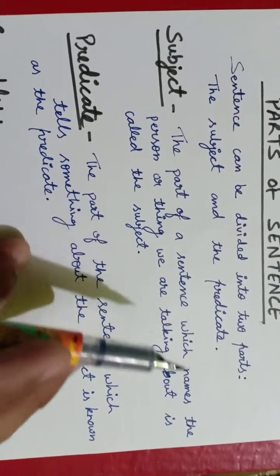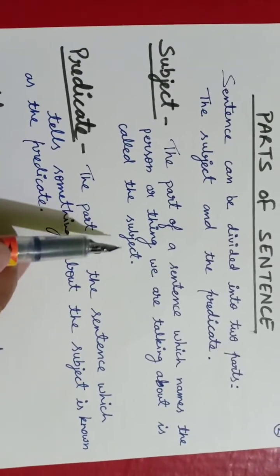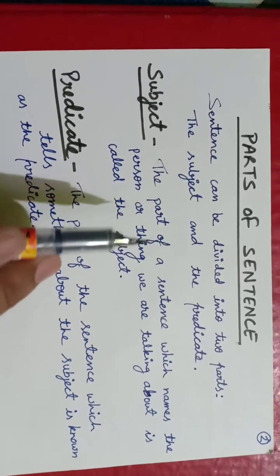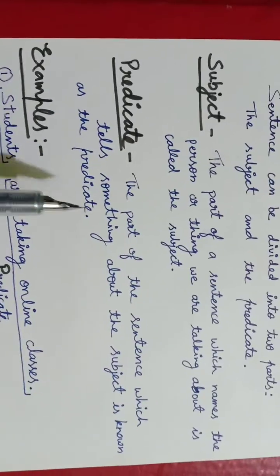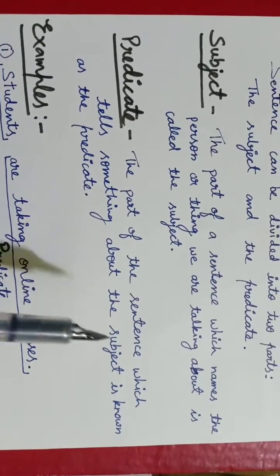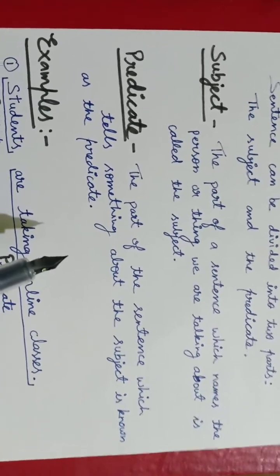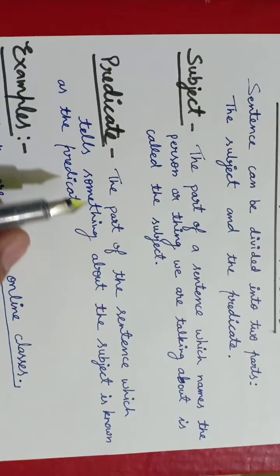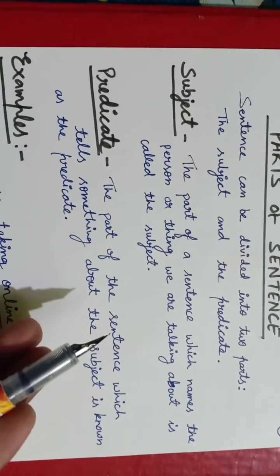The part of a sentence which names the person or thing we are talking about is called the subject. Sentence ka wo part jiske baare mein baat ki jati hai wo hota subject. Predicate: the part of the sentence which tells something about the subject is known as the predicate. So a sentence ke andar jiske baare mein baat ki jati hai wo hota subject aur jo baat ki jati hai wo hota predicate.